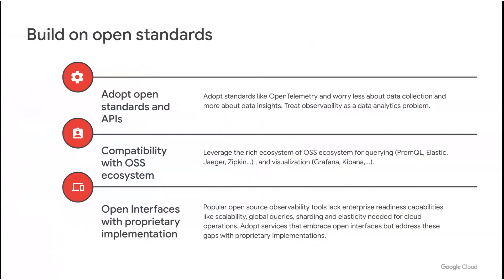The second group of best practices are related to building your observability footprint based on open standards. Over the past two decades, one of the big challenges for operators was keeping up with the data collection problem for metrics and logs. There were many proprietary solutions, all siloed and incomplete. Users spent more time figuring out how to ingest data rather than deriving actionable insights. Adopting open standards like OpenTelemetry can reduce the data collection pain and enable you to focus on analytics for your operational use cases. In addition to open APIs and standards, there is a rich open source ecosystem including tools like Prometheus, Elastic, Jaeger, etc. We recommend users use tools and services compatible with this open source ecosystem, either as a do-it-yourself implementation or offered as compatible managed services.